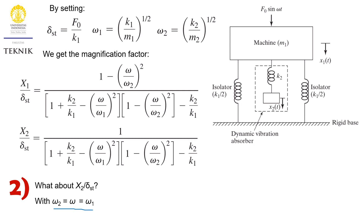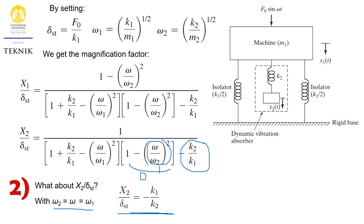Looking at the equation for X2, the term containing the frequency ratios reduces to 0, so the denominator is left with just minus k2 over k1. This reduces the whole equation for X2 over static deflection. Since static deflection equals F0 over k1, we get X2 times k2 equals minus F0. This tells us that the force exerted by the additional mass 2 is opposite to the exciting force — conceptually it is as if the excitation is being absorbed wholly by mass 2, which is why this concept is called vibration absorption.